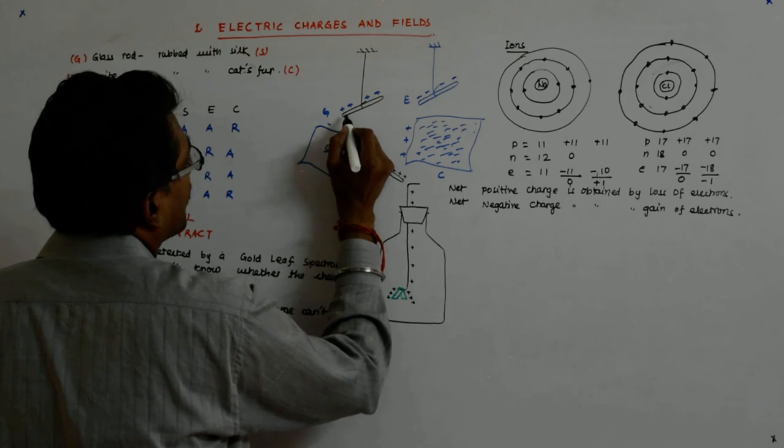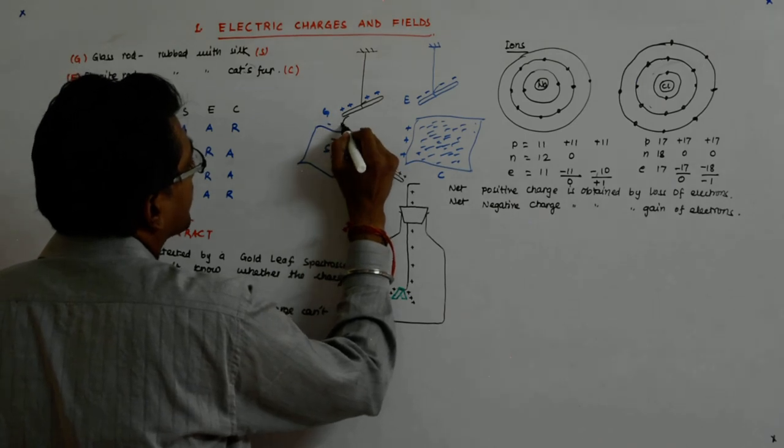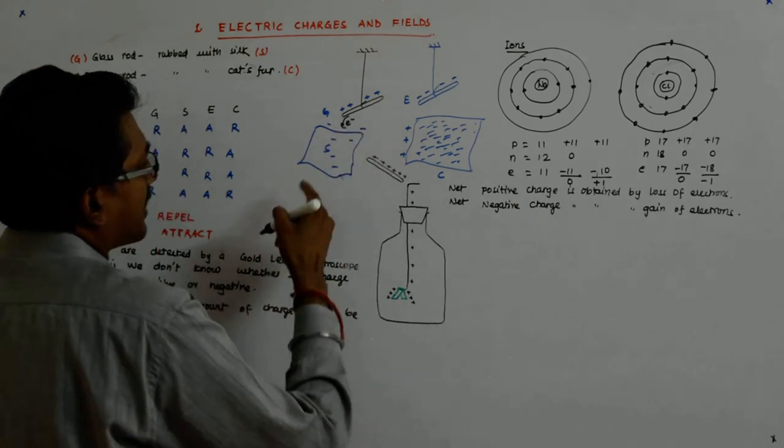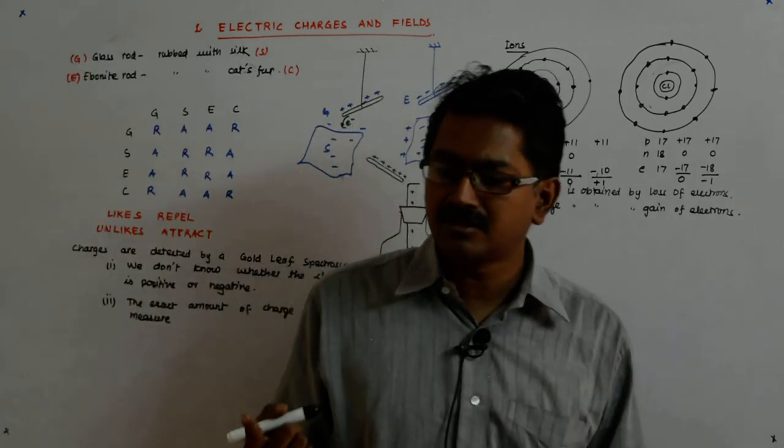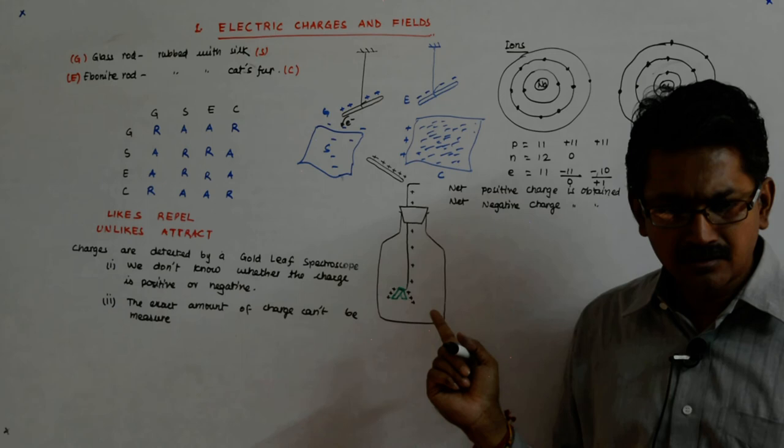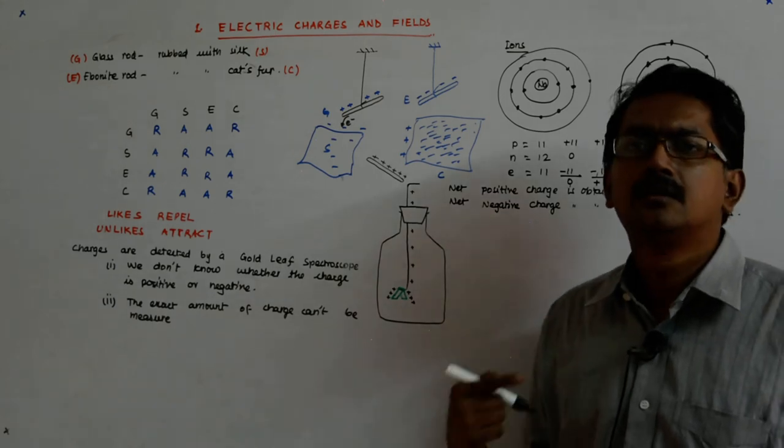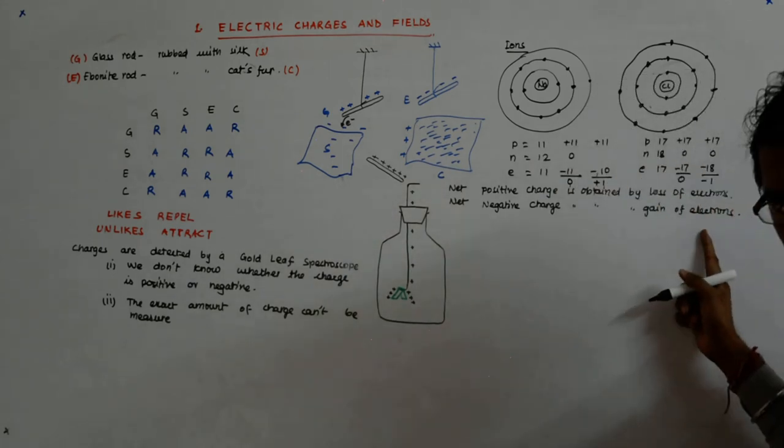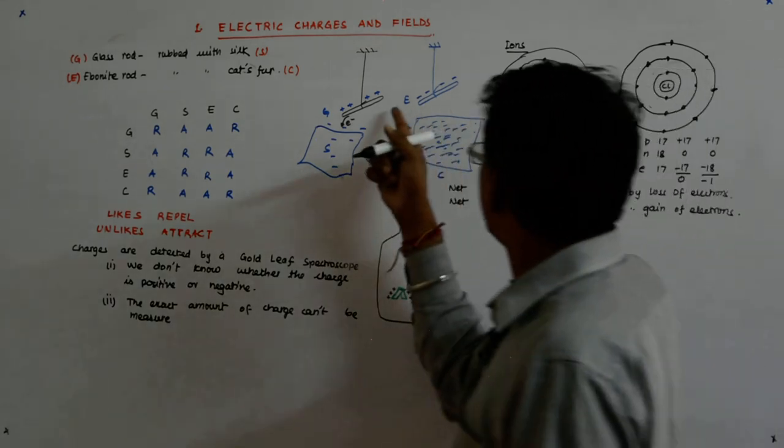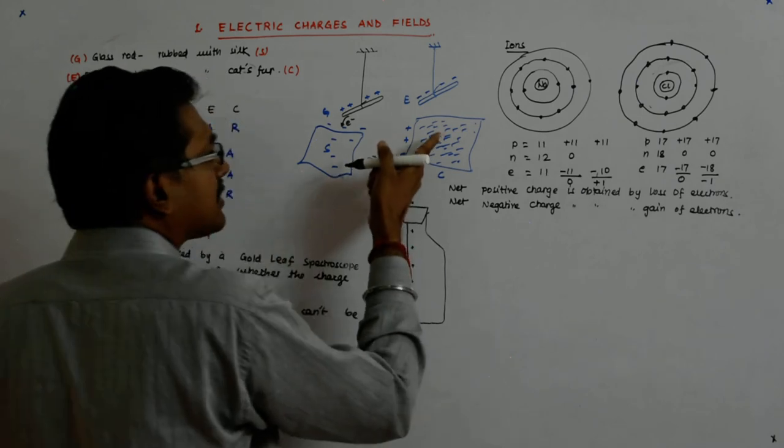Somehow some electrons from the glass rod must have jumped from here to here. So it was electrons which got transferred, so that the silk cloth got excess of electrons. And the glass rod became deficient in electrons, and deficiency of electrons is positive charge. So that's why this must have become positive and this negative.